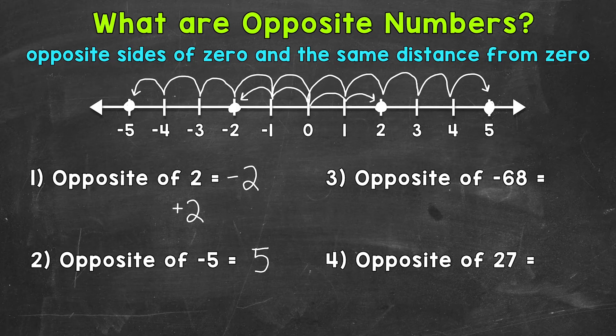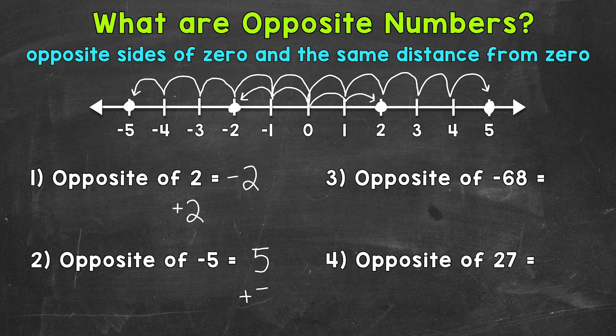And remember, no sign represents positive. Or we can write it with a plus sign, so we can also do positive five like this. Either way, the opposite of negative five is positive five.